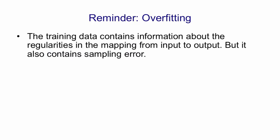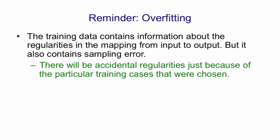Just to remind you, the reason we get overfitting is because as well as having information about the true regularities in the mapping from the input to output, any finite set of training data also contains sampling error. There's accidental regularities in the training set just because of the particular training cases that were chosen.